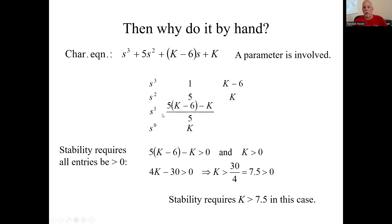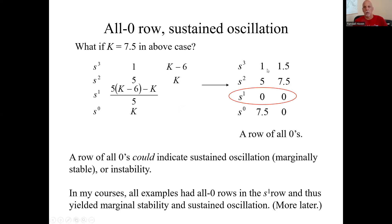And I'm going to say, kind of a spoiler alert, if the all zero row is the S^1 row, you will get marginal stability if that's the only all zero row, at least coming down from the top. And you know what that means? That's going to mean a single pair of complex, actually, imaginary poles right on the imaginary axis.